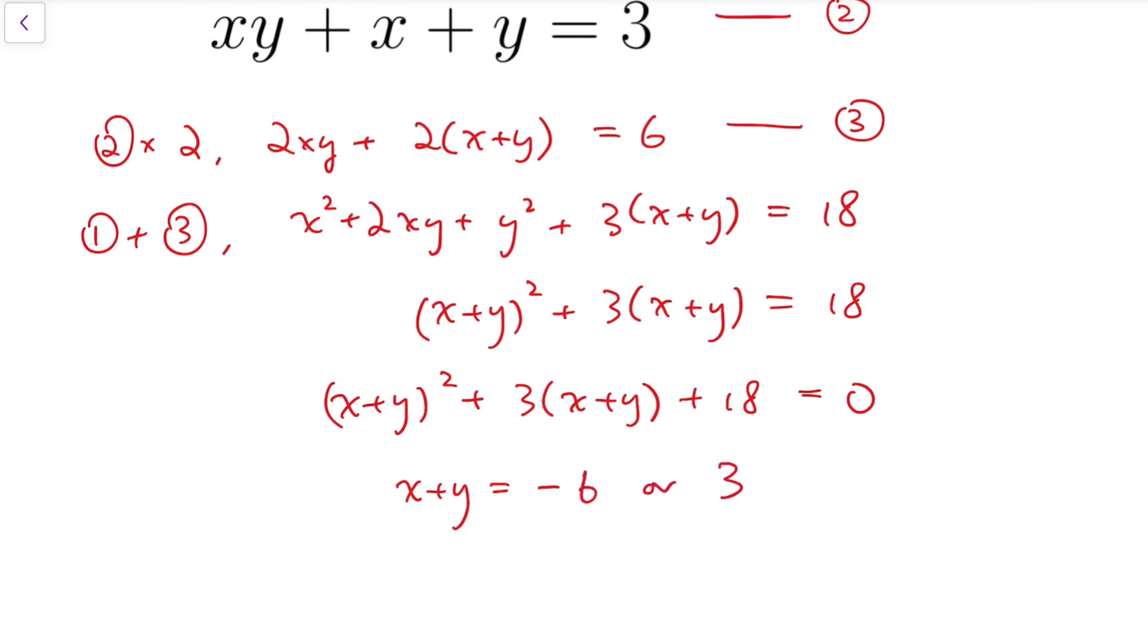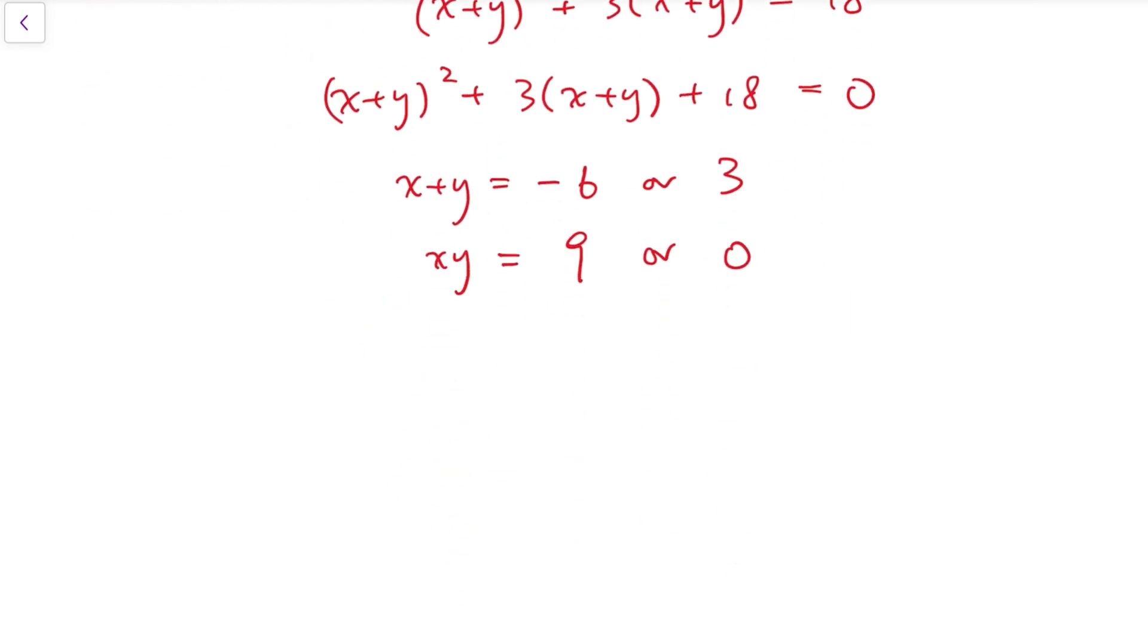And so x + y is either -6 or 3. And we can obtain the solution for xy. The possible values are either 9 or 0. So the steps can repeat, just like what happened in the first approach.